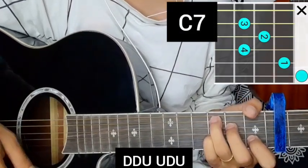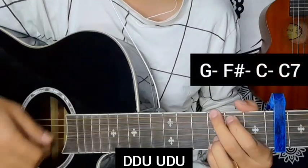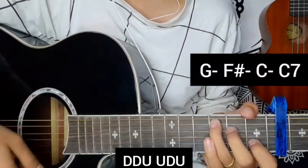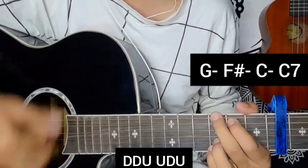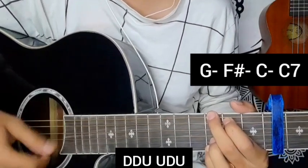C7 chord: G, F sharp, C major, C7 chord. Rhythm: down down up up down down down.